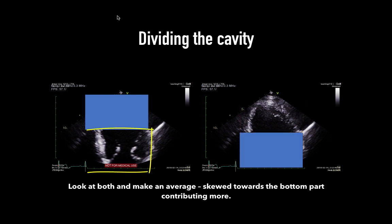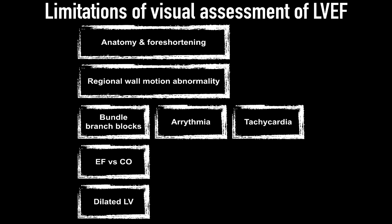The top half contributes roughly one-third of the volume while the bottom contributes two-thirds. As an example, if the apex has an EF of 30% and the base has an EF of 60%, the average would be around 45%. However, since the base contributes more, the EF can be edged towards 50–55%. Factors that limit visual assessment of LVEF include anatomy and foreshortening, regional motion abnormalities, bundle branch blocks, arrhythmias, tachycardia, the paradigm of ejection fraction versus cardiac output, and a dilated LV.